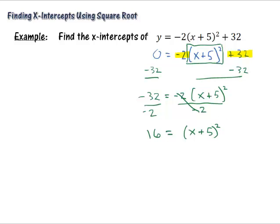So now, since I've got the squared part by itself, I'm going to take the square root of both sides. And that leaves me with the square root of 16. Remember, it's going to be ±4. And then this side, I'm going to take the square root and square, that just leaves me with x + 5.